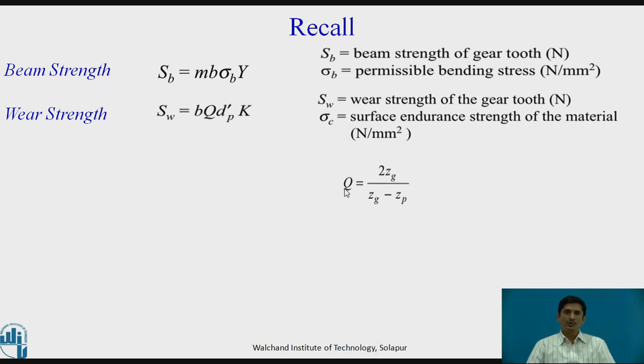q equals 2 Zg upon Zg minus Zp, where Zg is the number of teeth on gear, Zp is the number of teeth on pinion and it gives you the ratio factor. k is given as 0.16 Bhn upon 100, the bracket square.